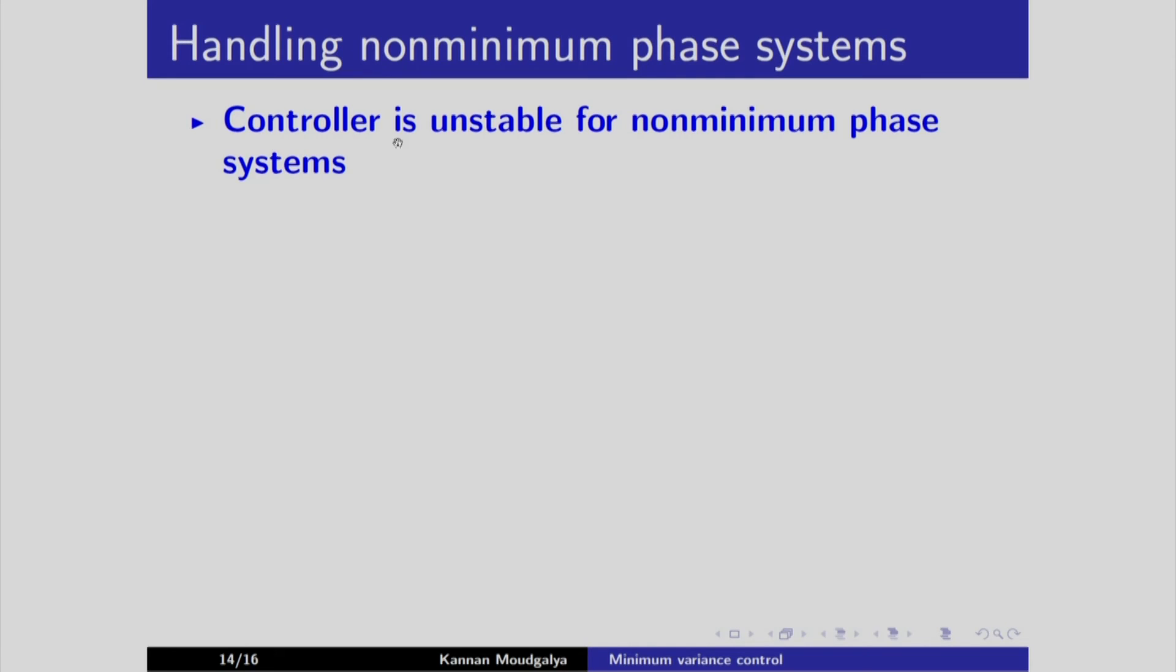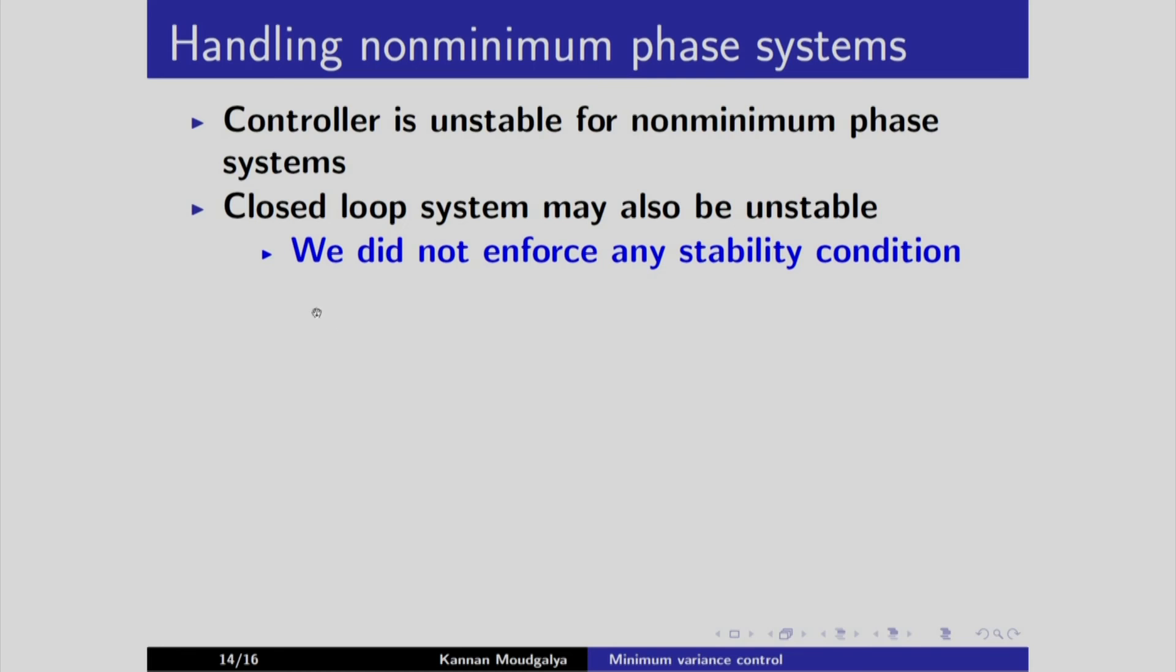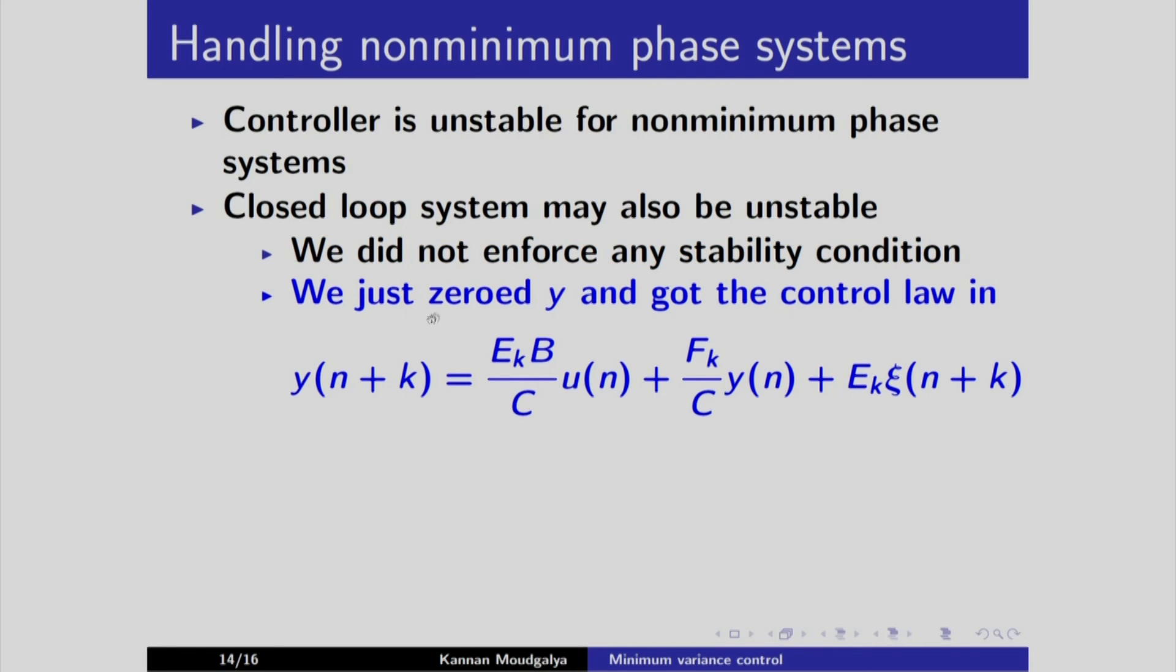As mentioned in the previous slide, controller is unstable for non-minimum phase systems. In fact, the closed loop system may also be unstable. The reason is, we did not enforce any stability condition to arrive at the control law. What did we do? We just zeroed y in this and then we got rid of this. We zeroed this and got the control law. We did not enforce any stability condition. This approach does not work for non-minimum phase systems.